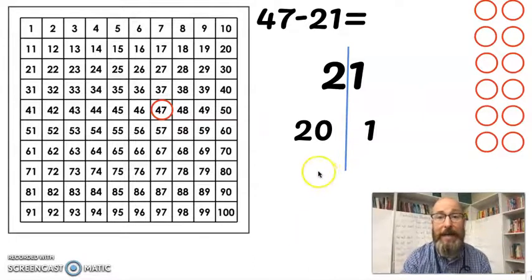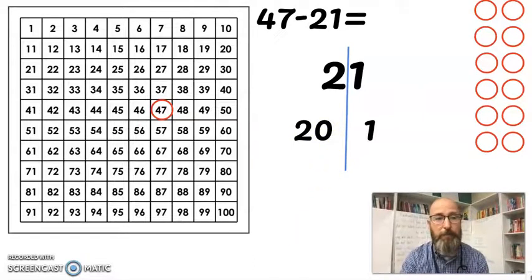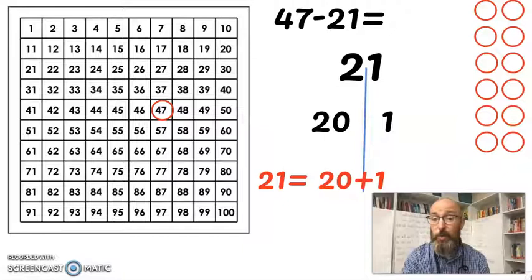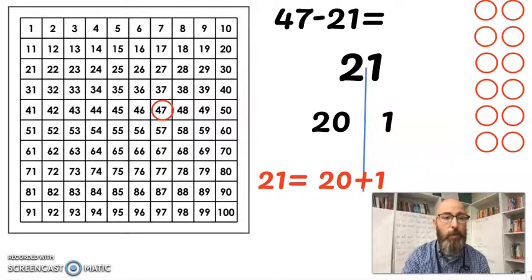So that's where I get the 20 and the 1 from. So let's go back to what we know. 47 minus 21, if you draw a line between it, it means a 20 and a 1 and that's where we get 21 equals 20 plus 1. So what do we do with that? How do I work with that?